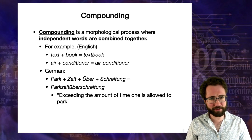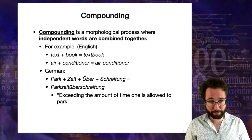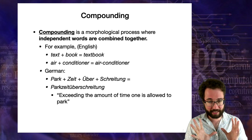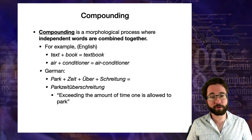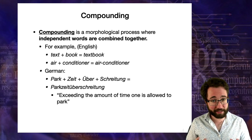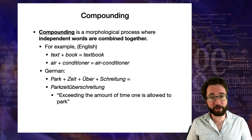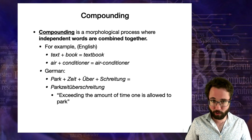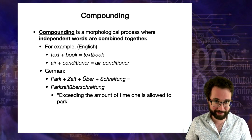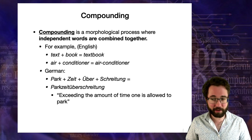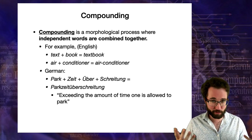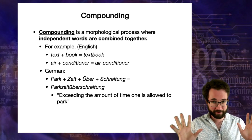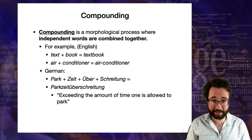Breaking down that German compound: 'schreitung' means stepping, 'über' means over, so 'überschreitung' means overstepping — a kind of transgression. 'Park' means parking, 'Zeit' means time. So translated morpheme by morpheme into English it would be 'park-time-overstepping', meaning overstepping the amount of time you're allowed to park. The German language is full of these very expressive compound words.